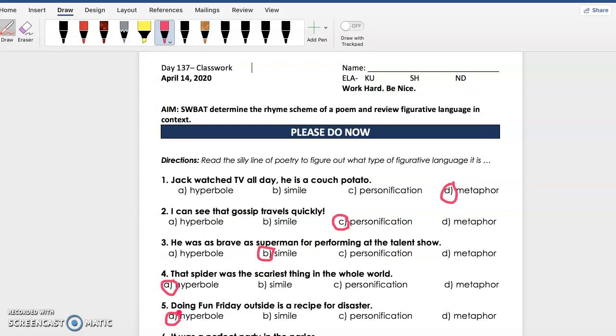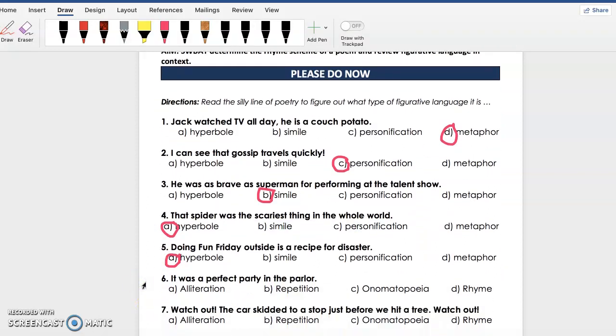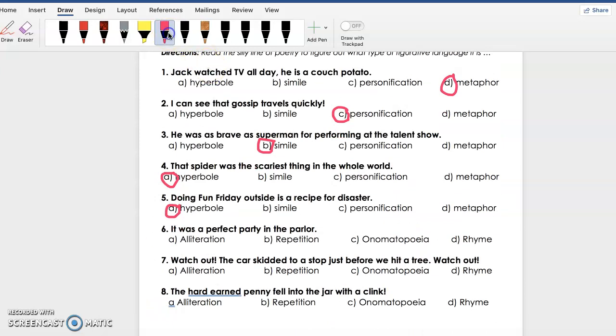Okay, let's continue on. Number six: It was a perfect party in the parlor. So we see that hard, be perfect, party, parlor all start with the same beginning sound, and we know that that is alliteration. So if you chose alliteration, you were right.